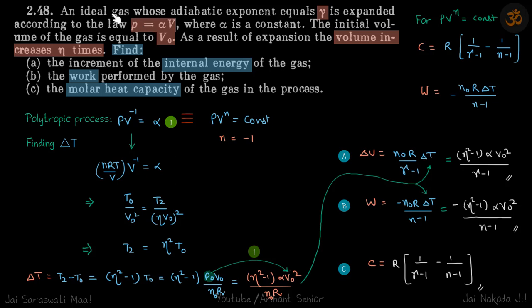We are given an ideal gas that follows the process p is equal to alpha v, so p is proportional to v.